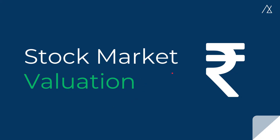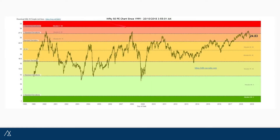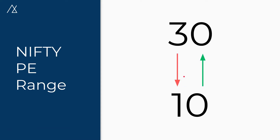Before starting, hit the subscribe button to motivate us. Now, we have seen this PE chart in my previous video — the link is provided here, so do check that video first. If we observe this PE chart, the lowest point is 11 and the highest point is 28. So we can say the Nifty PE ratio moves in a particular range over the last 20 odd years — when Nifty PE reaches 10, it shoots up to 30, and again back to 10, and the cycle continues.